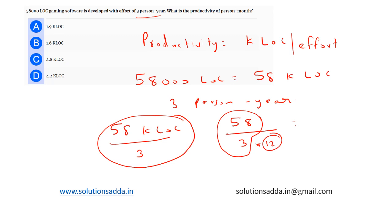The answer is approximately 1.61 KLOC, so the right answer is option B: 1.6 KLOC. KLOC stands for kilo lines of code.